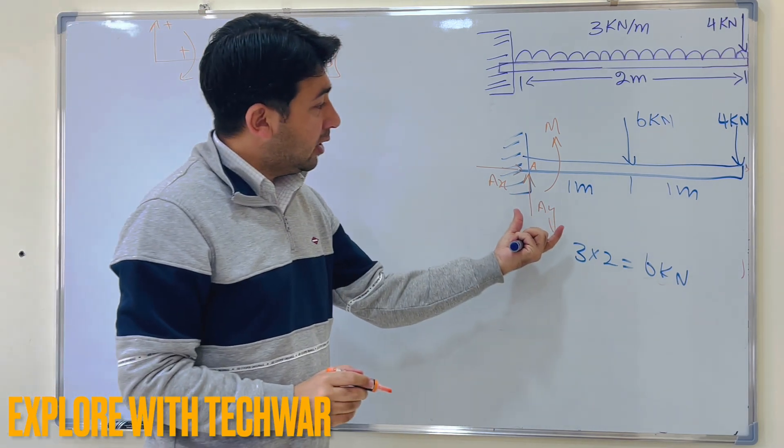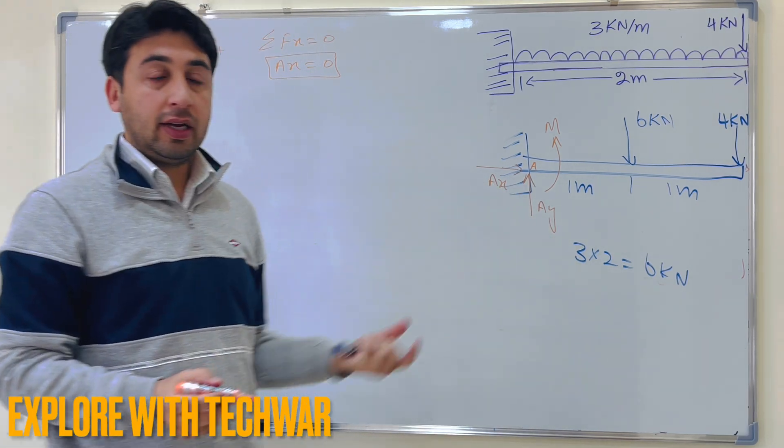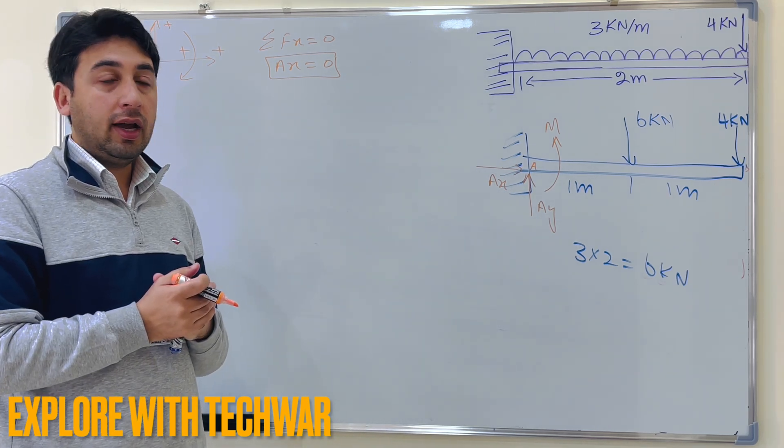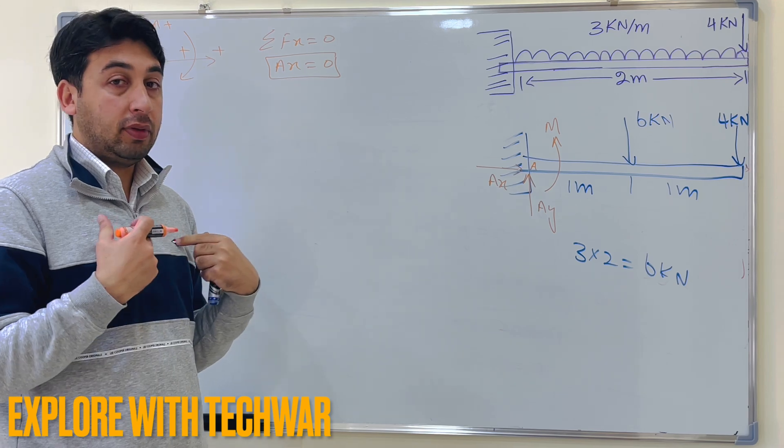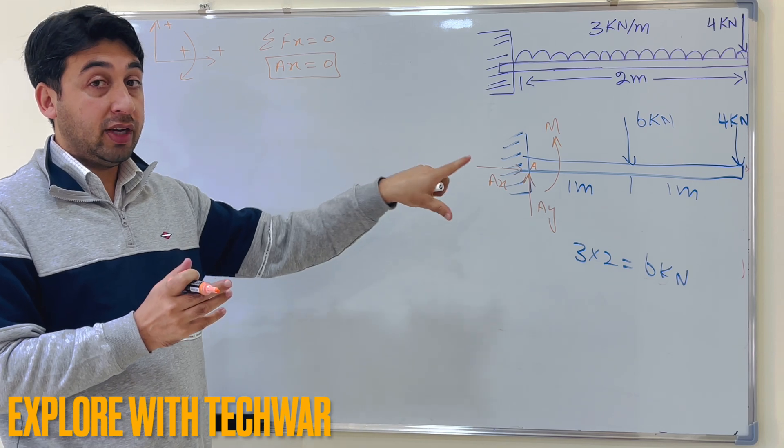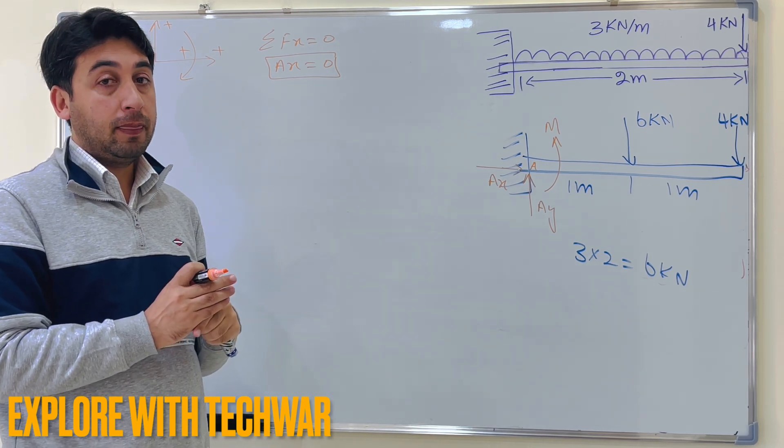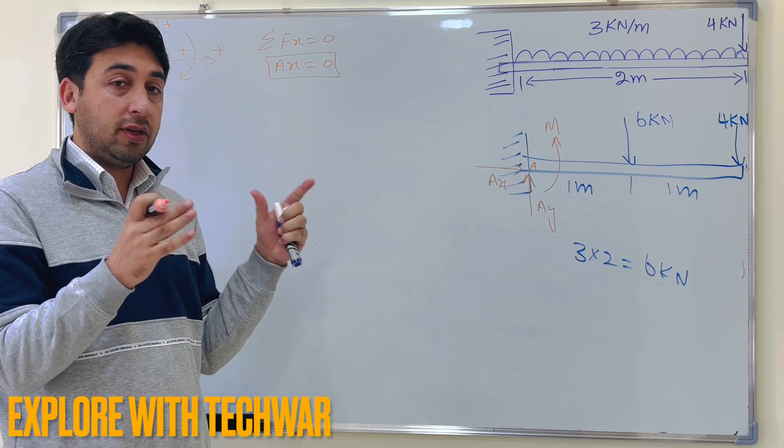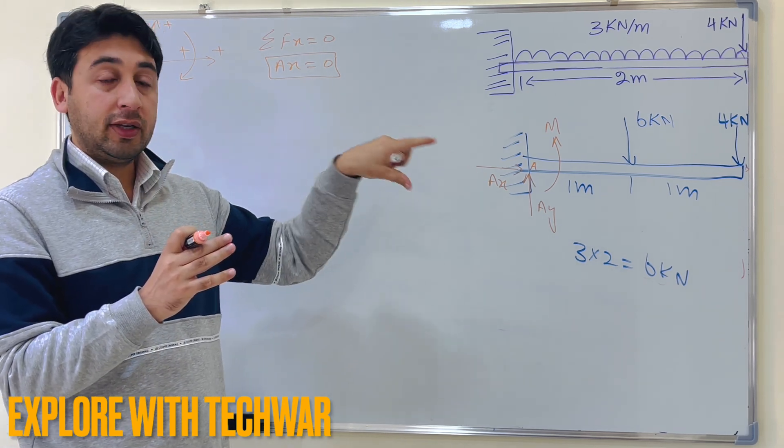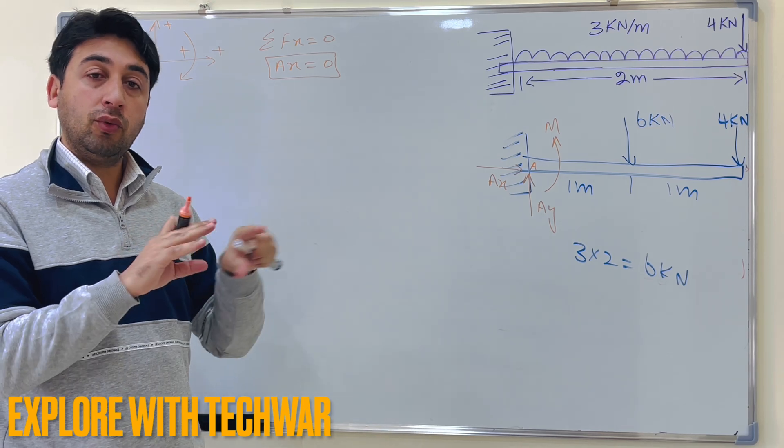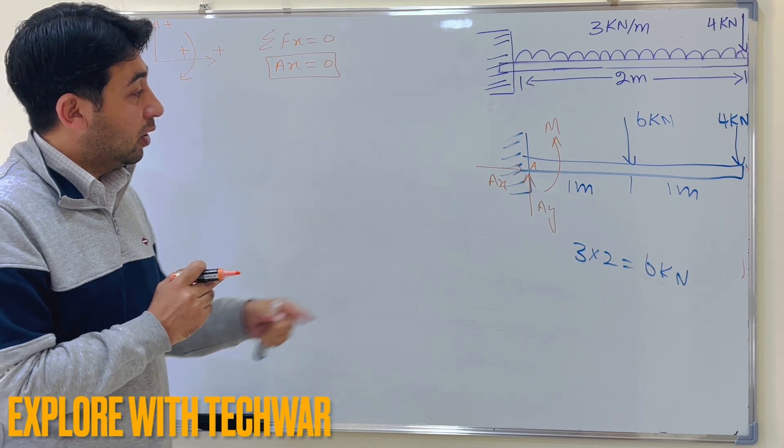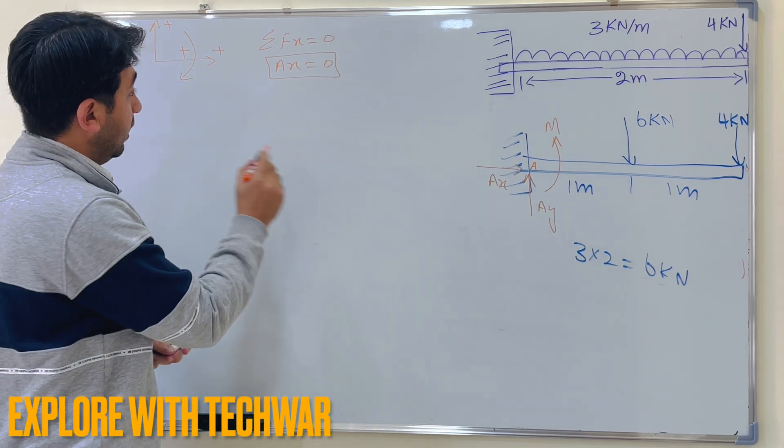Now to find AY, what I can do, I can take another condition of equilibrium, sum of all the forces acting in the y direction, I have to make it 0 if I am saying that the beam is at equilibrium, which we have said that this is at equilibrium. So whenever we are solving these types of problems, keep this in mind that always we are considering that our system, if it is cantilever beam, simply supported beam, whatever beam it is, we are considering that this beam is at equilibrium.